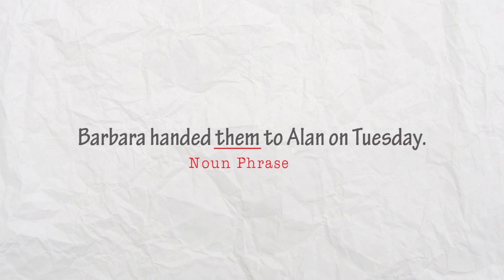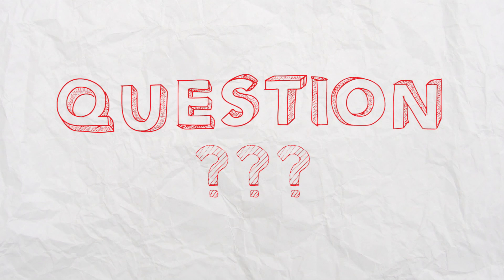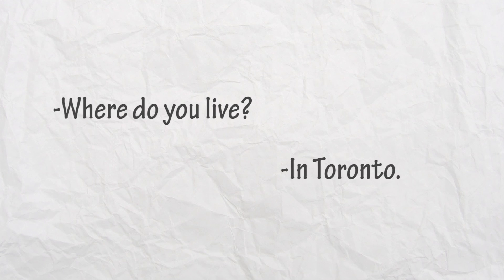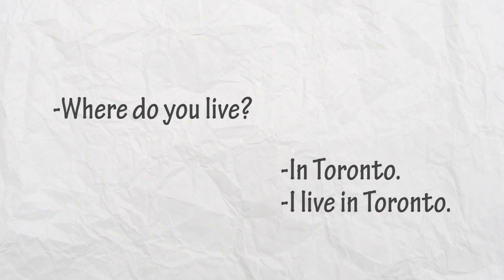In everyday language, a phrase is usually more than one word. For example: 'Where do you live?' — that is a sentence. But if I answer 'in Toronto,' that's a phrase. If I say 'I live in Toronto,' that would be a sentence again, and the phrase 'in Toronto' would be part of that sentence.